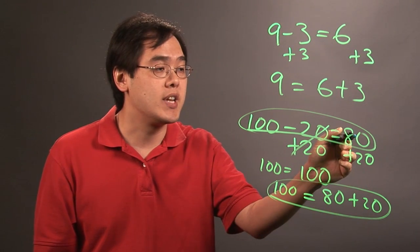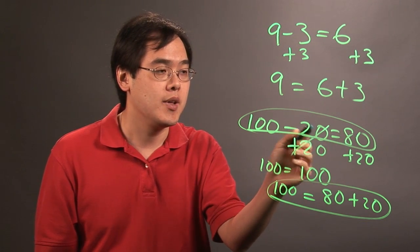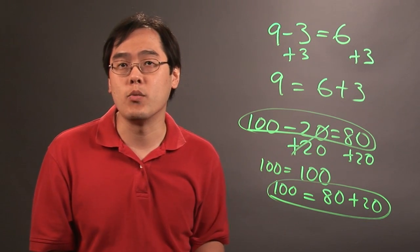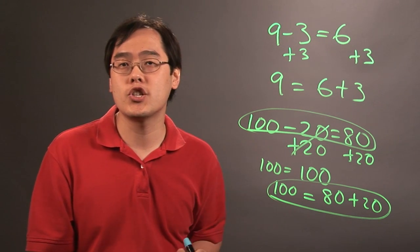Basically what you're doing is you're taking the answer to the subtraction problem and adding the number that was being subtracted from the original, and you're pretty much done. So I'm Jimmy Chang, and that's how to use addition to check subtraction.